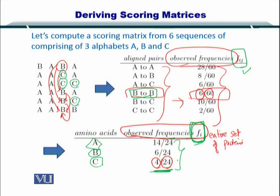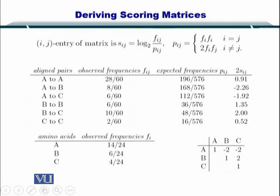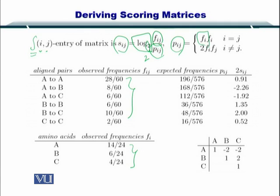So now you have a list here and here, and these lists have been put here for you. So the entry in S, that is the scoring matrix i,j, so any entry can be computed by simply computing the log to the second base here of f_ij over p_ij. So what is p_ij?